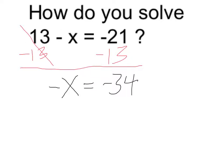So now I know that negative x is equal to negative 34. In other words, the opposite of x is equal to the opposite of 34. When you think about it, it's really just another way of saying that x is equal to 34.